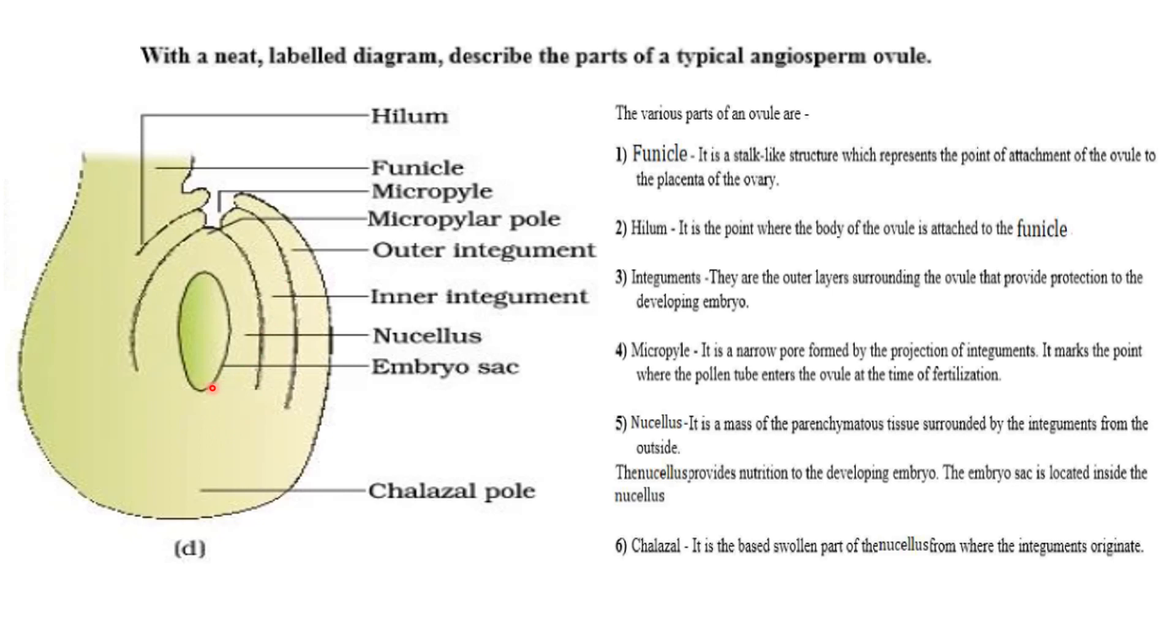Next is nucellus. It is a mass of parenchymatous tissue surrounded by the integuments from outside. The nucellus provides nutrition to the developing embryo and the embryo sac is located inside the nucellus.